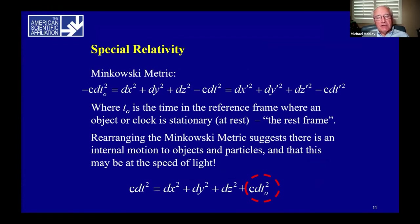In the study of special relativity, Professor Hermann Minkowski developed a useful metric to relate the motion of an object or clock in one reference frame to that and another. Here, where T0 is the time in the reference frame where an object or a clock is stationary or at rest is the rest frame. Rearranging the Minkowski metric suggests that there is an internal motion to all objects and particles and that this may be at the speed of light.